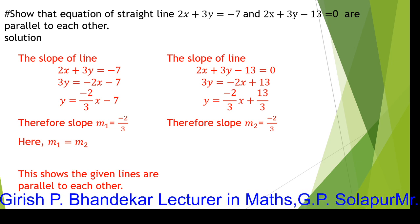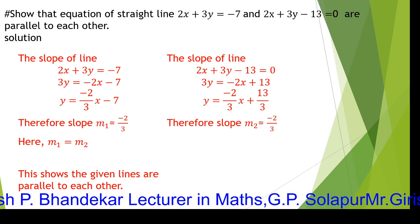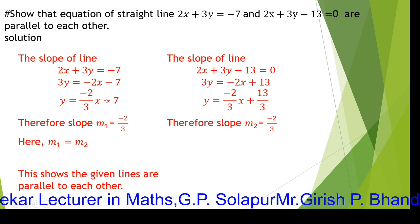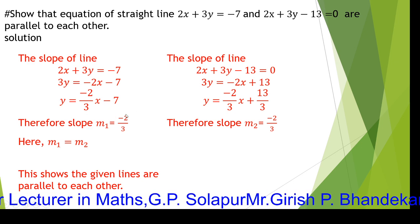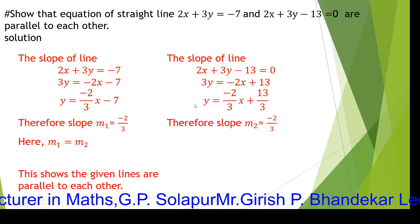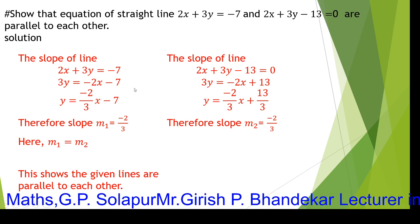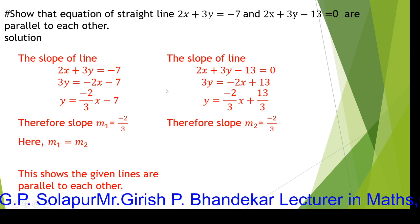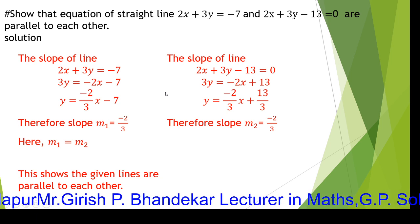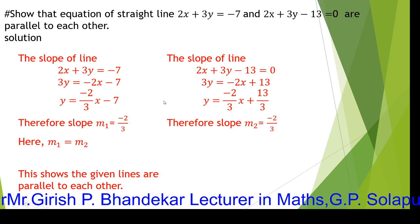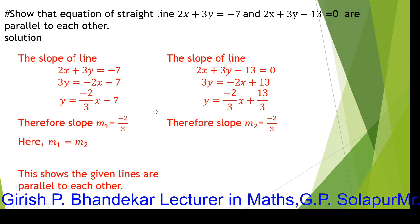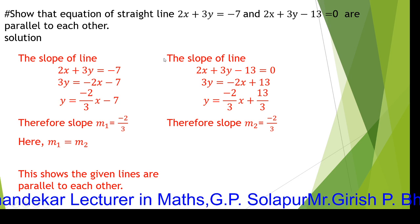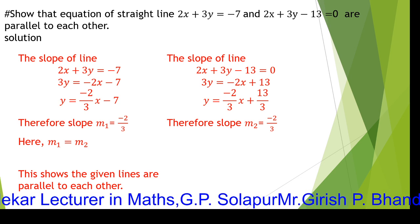Both slopes are equal — M1 equals M2 equals minus 2 by 3. When both slopes are equal we conclude the given lines are parallel to each other. We applied the standard form y equals mx plus c, where the coefficient of x gives us the slope, which we studied in the first video.